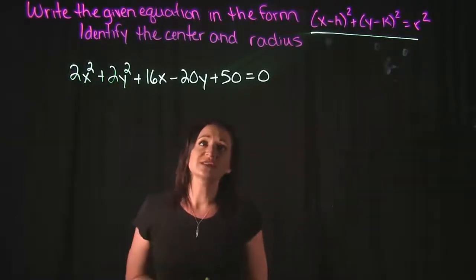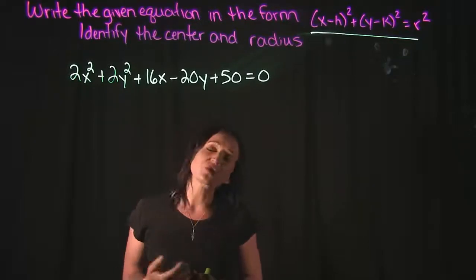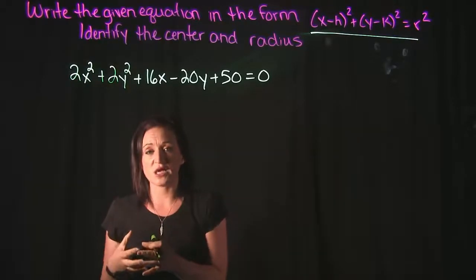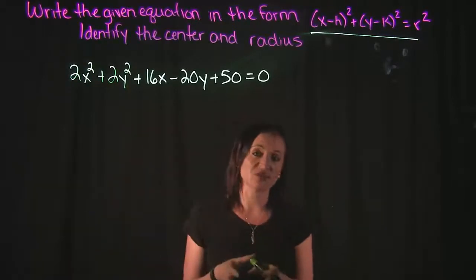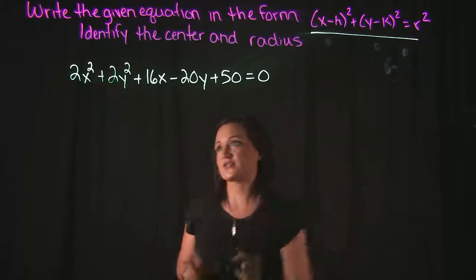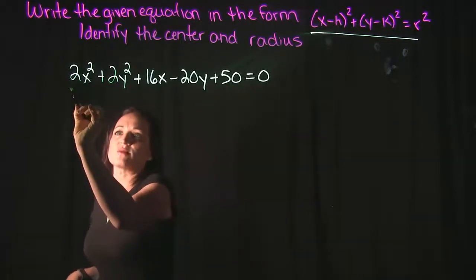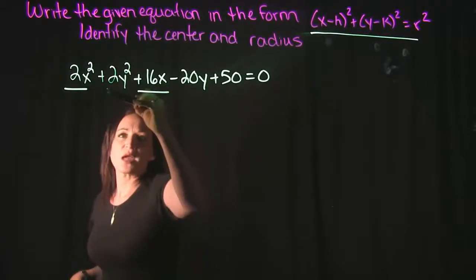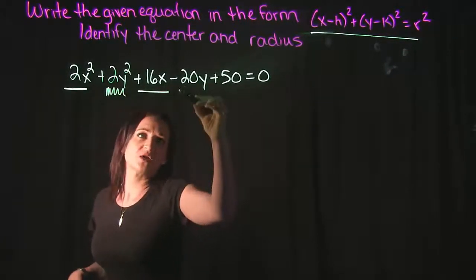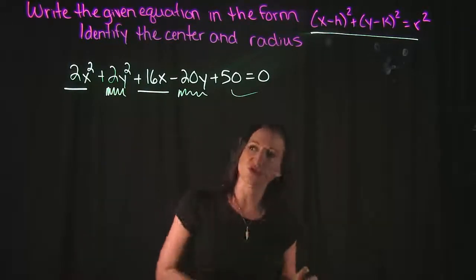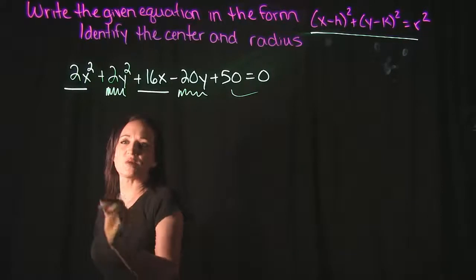So the first step in doing this is to do a little bit of rearranging with your equation. What you want to do is you want to group your x terms together. You want to group your y terms together. And then whatever your constant is, you want to kick it over to the other side. So my x terms are going to be 2x² and 16x. My y terms are going to be the 2y² and the -20y. And then this 50 is going to get kicked over to the other side. So this is how I'm going to rearrange it.